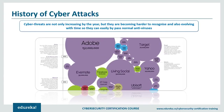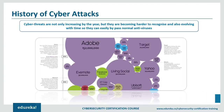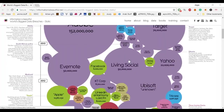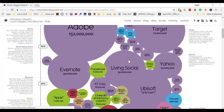The internet isn't as safe as you might think — this applies not just to individuals but also large organizations. There have been multiple cyber breaches compromising privacy and confidentiality. On the site 'Information is Beautiful,' you can see all the major cyber breaches. Even big companies like eBay, AOL, Evernote, and Adobe have gone through major breaches despite having significant security measures in place.